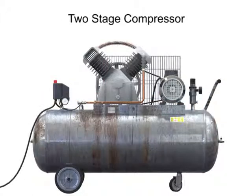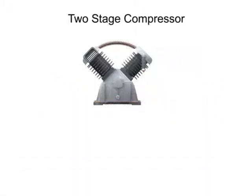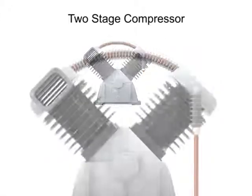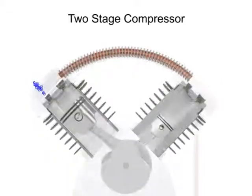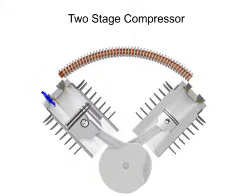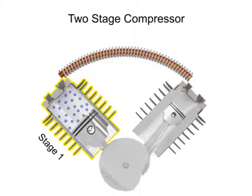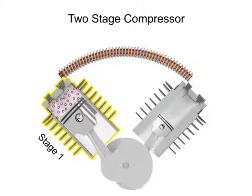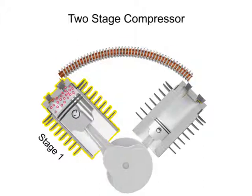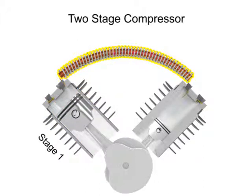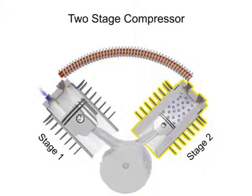To avoid the hazards of overheating and still generate higher pressures, manufacturers make compressors with multiple stages. The air is compressed in the first stage, which is typically the largest stage, then cooled, then compressed in a second stage.